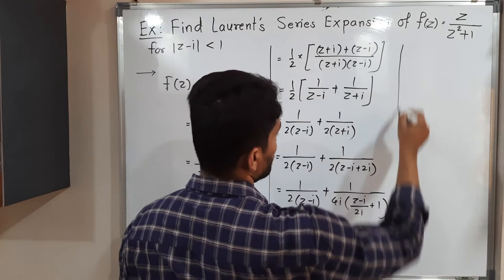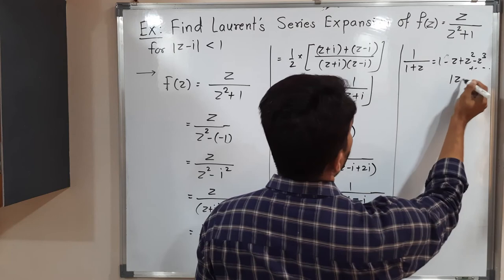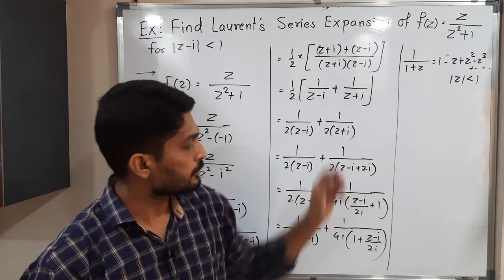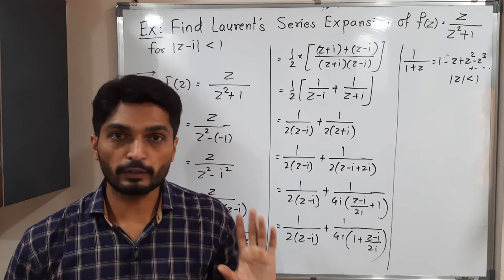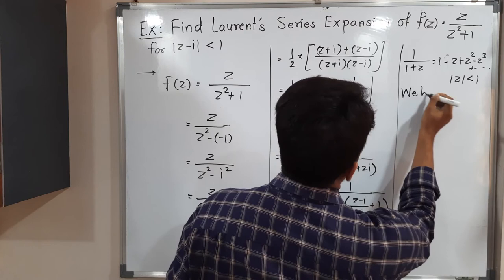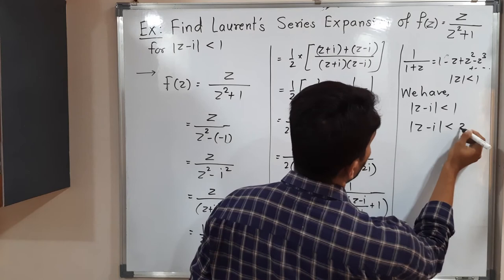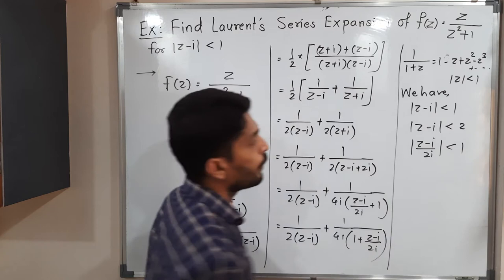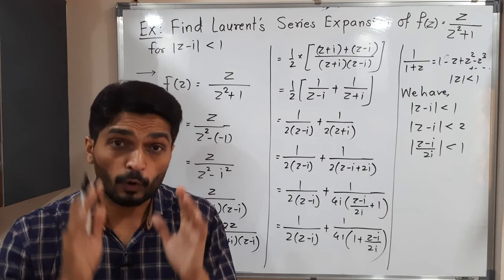The well-known series 1/(1 + z) = 1 - z + z² - z³ + ... is applicable when |z| < 1. Here, in place of z we have (z - i)/(2i). We can expand in this way provided |( z - i)/(2i)| < 1. We already know |z - i| < 1, which implies |z - i| < 2, so |(z - i)/2| < 1. Since |i| = 1, writing 2i instead of 2 doesn't change the modulus condition, so the series is valid.